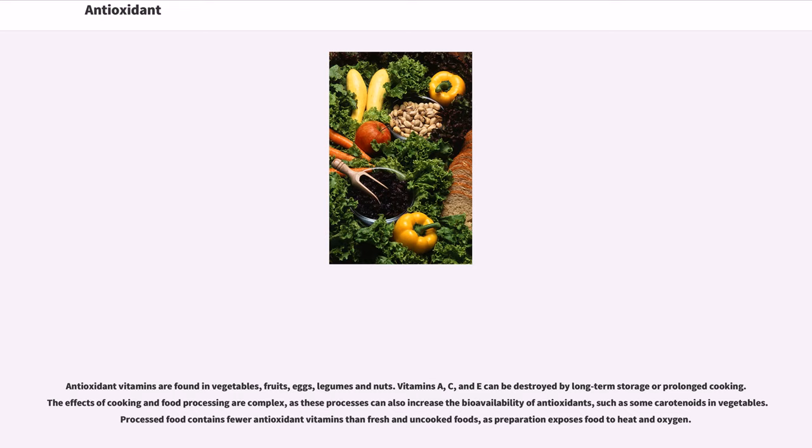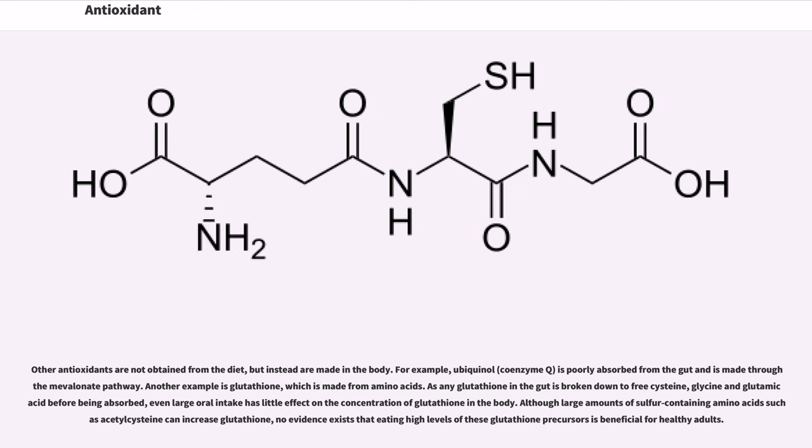Other antioxidants are not obtained from the diet, but instead are made in the body. For example, ubiquinol (coenzyme Q) is poorly absorbed from the gut and is made through the mevalonate pathway. Another example is glutathione, which is made from amino acids. As any glutathione in the gut is broken down to free cysteine, glycine and glutamic acid before being absorbed, even large oral intake has little effect on the concentration of glutathione in the body. Although large amounts of sulfur-containing amino acids such as acetylcysteine can increase glutathione, no evidence exists that eating high levels of these glutathione precursors is beneficial for healthy adults.